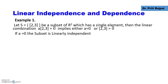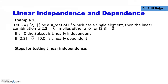For example, if S is a subset of R2 with just one vector (2, 3), this vector can be expressed as a linear combination only by multiplying it by a scalar a. So the linear combination is a times (2, 3). If we equate this to zero, either a will be zero or the vector (2, 3) will be zero. If a is zero, the set is linearly independent; if the vector is zero, it is linearly dependent.